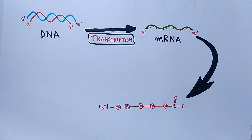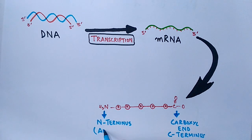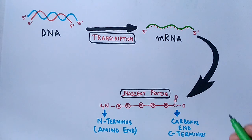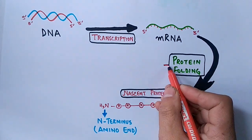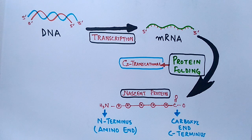The polypeptide chain has an N-terminus (amino end) on one side and a C-terminus (carboxyl end) on the other. Protein synthesis proceeds from N-terminus to C-terminus. In co-translational folding, the N-terminus side of the polypeptide chain begins folding while the C-terminus is still being synthesized.